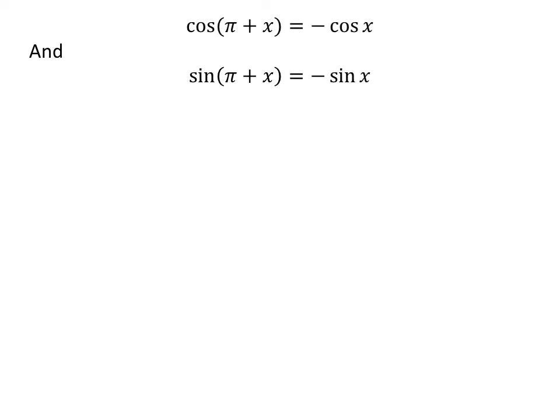We also know cosine of pi plus x is equal to minus cosine of x, and sine of pi plus x is equal to minus sine of x. The verifications of these identities have been explained in the videos appearing in the upper right corner. The links of these videos are also given in the description section.